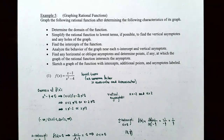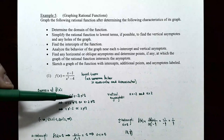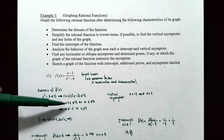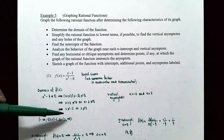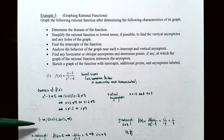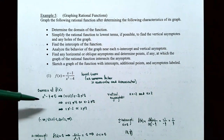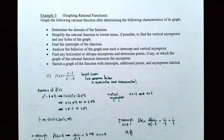For the domain, the denominator x² - 4 = (x + 2)(x - 2) cannot equal zero, so x ≠ -2 and x ≠ 2. The domain is all real numbers except x = -2 and x = 2, or in interval notation: (-∞, -2) ∪ (-2, 2) ∪ (2, ∞). Since there are no common factors, there are no holes, but x = -2 and x = 2 are vertical asymptotes.